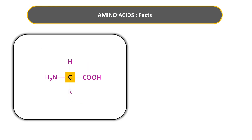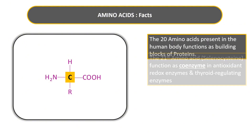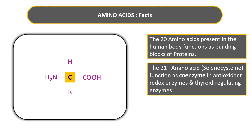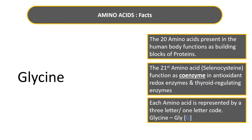There are around 300 amino acids in nature, but only 20 are found in the human body and take part in protein synthesis. Recently, a 21st amino acid — selenocysteine — has been identified, functioning as a coenzyme in antioxidant redox enzymes and thyroid-regulating enzymes. A 22nd amino acid, pyrrolysine, is found only in bacteria. Each amino acid is represented by a three-letter and a one-letter code. For example, glycine is represented as GLY with the symbol G.